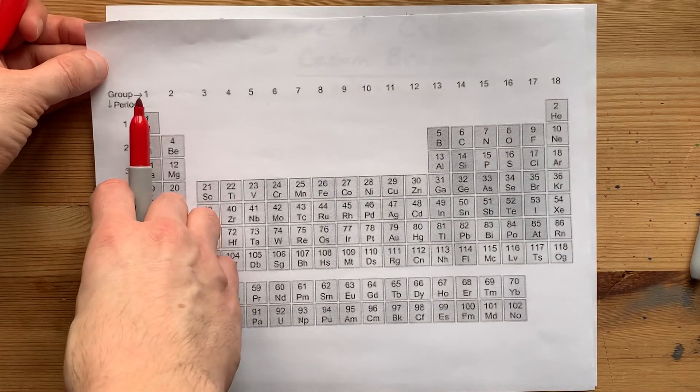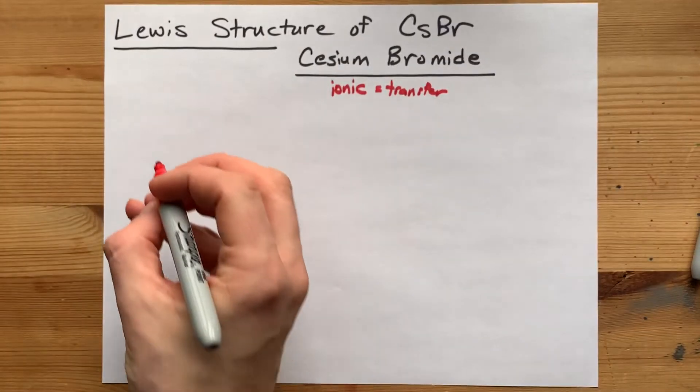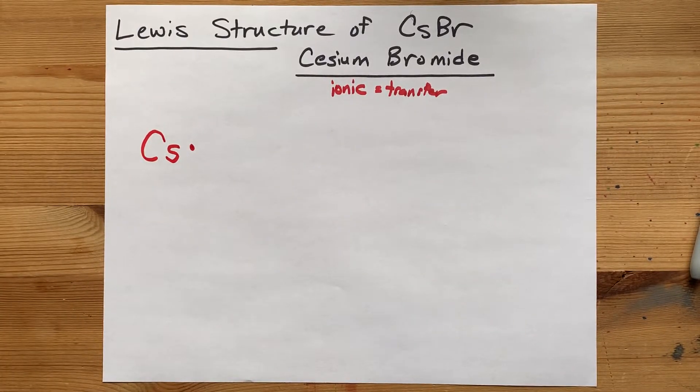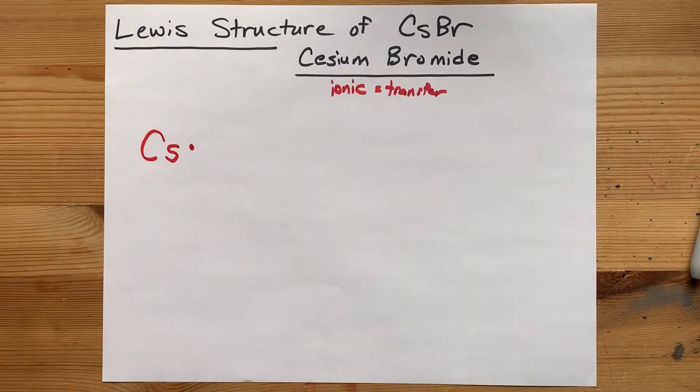Cesium is in group one. It has one valence electron, so draw the symbol with one dot around it. That's one electron in its outer shell.